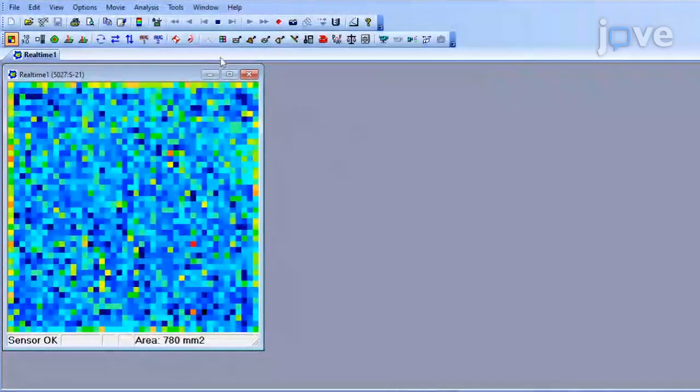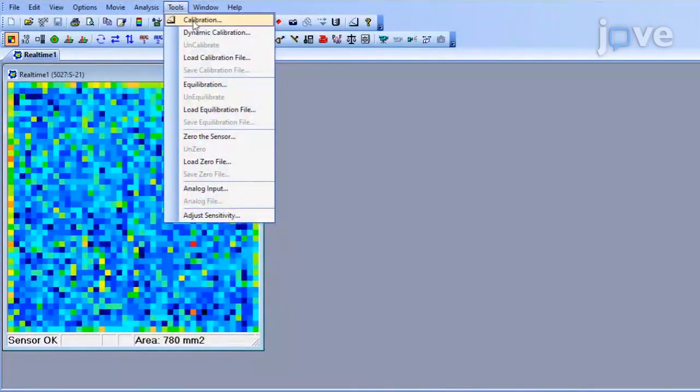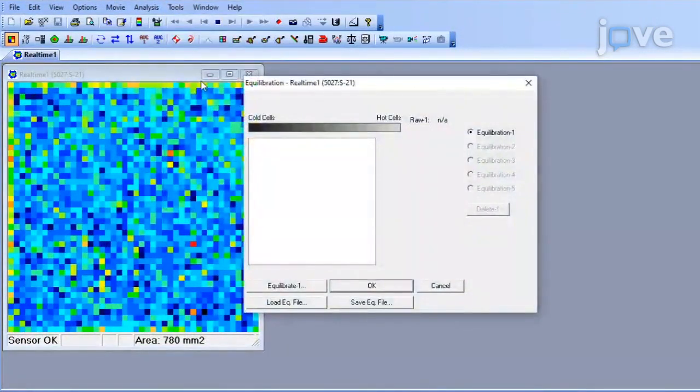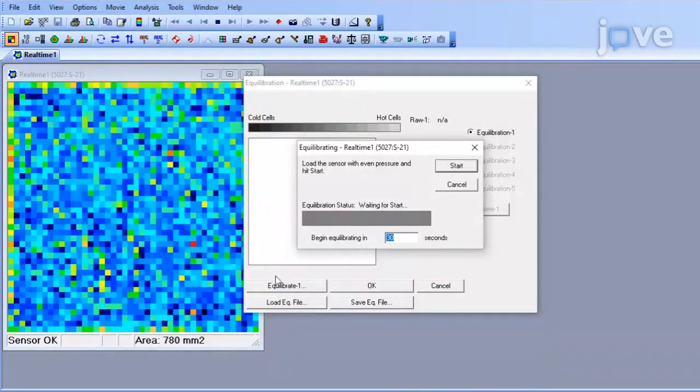While pressure is being applied, select Tools and Equilibration and click Equilibrate 1 and Start in the Equilibration dialog box. The color of Equilibration of the window should change to gray.